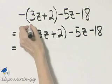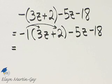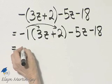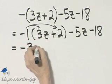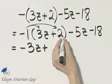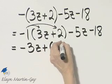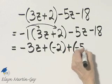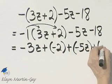Now to simplify this, we'll use the distributive property and then combine any like terms. So that's negative 1 times 3z, that would be negative 3z, plus negative 1 times 2, which is negative 2. Then let's write these as sums: plus negative 5z, plus negative 18.